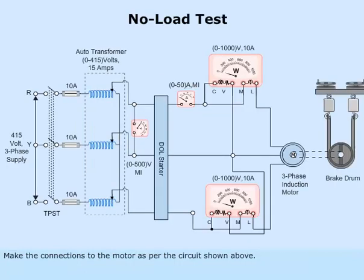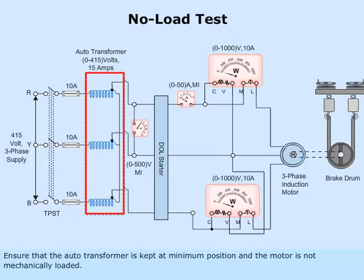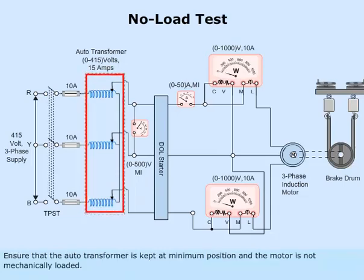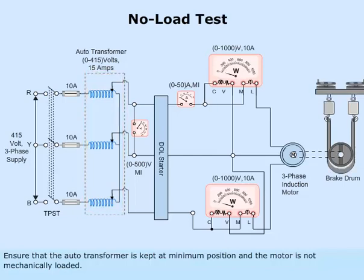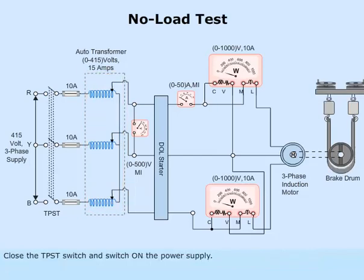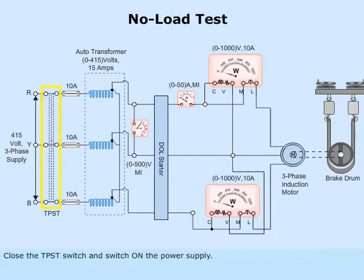Make the connections to the motor as per the circuit shown above. Ensure that the autotransformer is kept at minimum position and the motor is not mechanically loaded. Close the TPST switch and switch on the power supply.